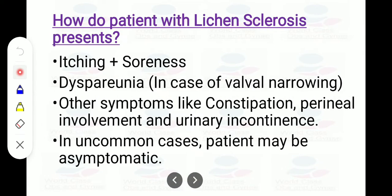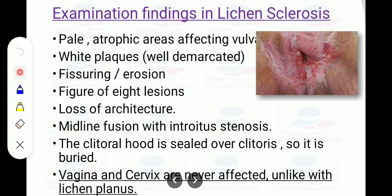Patients with lichen sclerosis present with itching, soreness, and dyspareunia due to vulval narrowing. There is loss of architecture on examination. Other symptoms include constipation, perineal involvement, and urinary incontinence. In uncommon cases the patient may be asymptomatic. In MCQs, thinning of skin, dyspareunia, narrowing of vulva, loss of architecture, constipation, and urinary incontinence all point to lichen sclerosis.